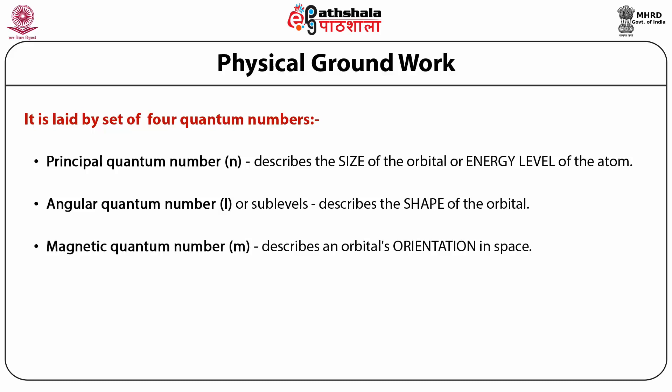The magnetic quantum number distinguishes the orbitals available within a sub-shell and is used to calculate the azimuthal component of the orientation of orbit in space. Electrons in a particular sub-shell (S, P, D, or F) are defined by values of l equal to 0, 1, 2, or 3 respectively. The value of m can range from minus l to plus l, inclusive of 0. Thus the S, P, D, F sub-shells contain 1, 3, 5, and 7 orbitals, each accommodating up to two electrons with opposite spins, forming the basis of the periodic table.